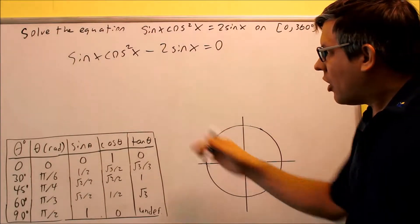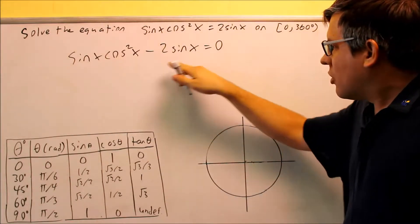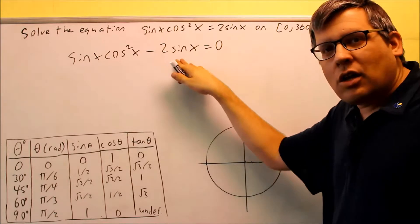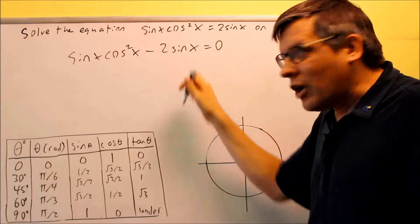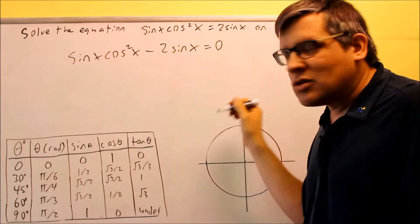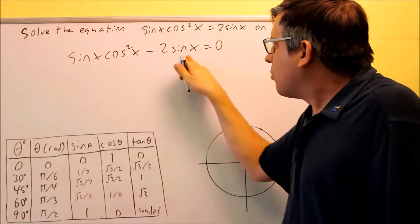The second step is going to involve factoring. So I notice I have two terms again, and this is going to be one of those where I'm only going to factor out the common factor. I'm not going to have two sets of parentheses here because I just look at what I can pull out.